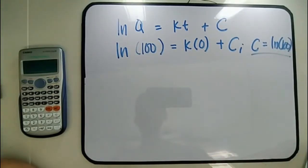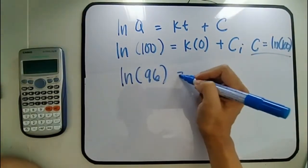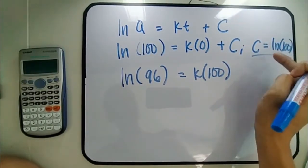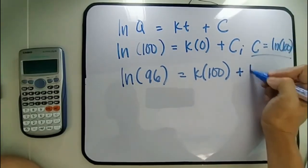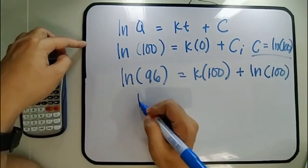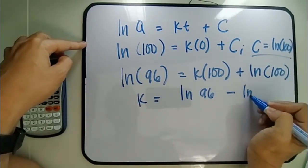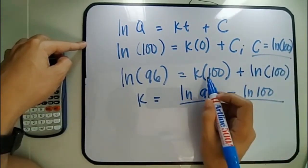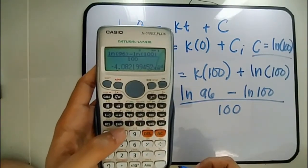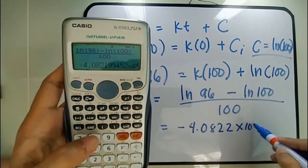Now let's find K using the second boundary condition. We have ln(96) = K(100) + ln(100). Solving for K: K = (ln 96 − ln 100) / 100. Therefore, K = −4.0822 × 10⁻⁴.